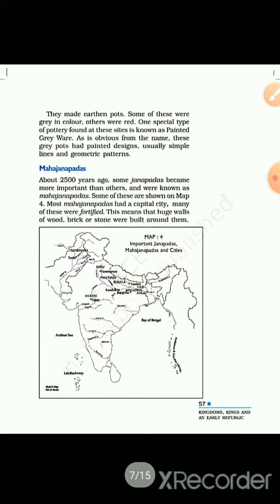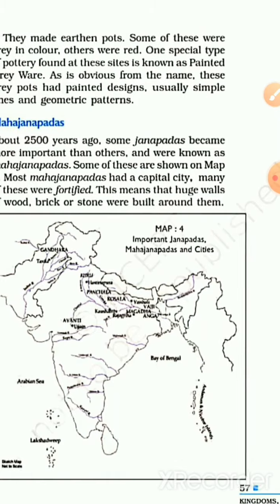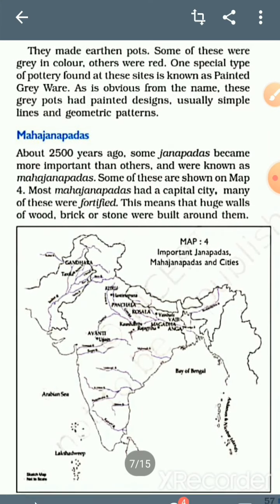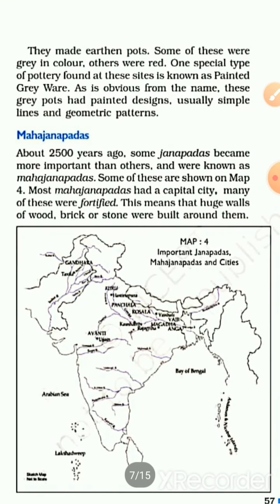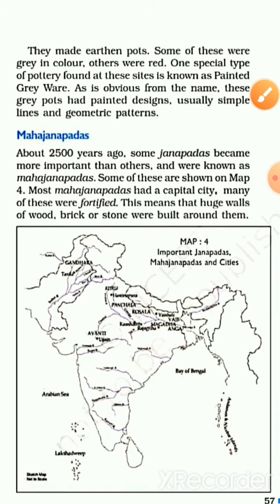The next topic is Maha Janpads. We have seen Janpads — where people lived and their rajas ruled. Now, about 2500 years ago, some Janpads became more important than others and were known as Maha Janpads. Underline this: Janpads became more important than others and were known as Maha Janpads. Some of these are shown on map 4.